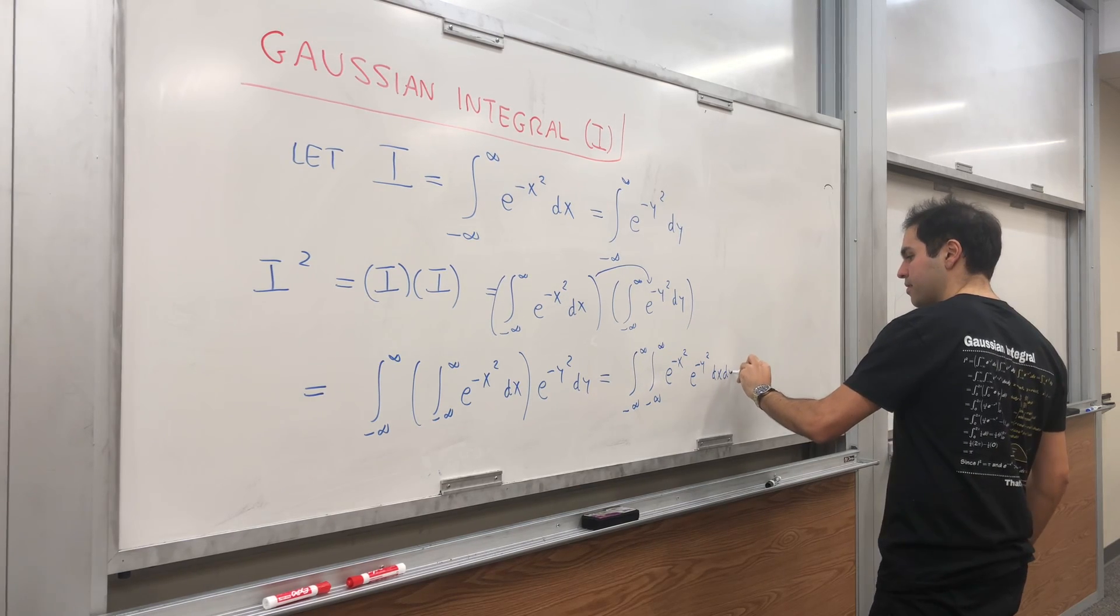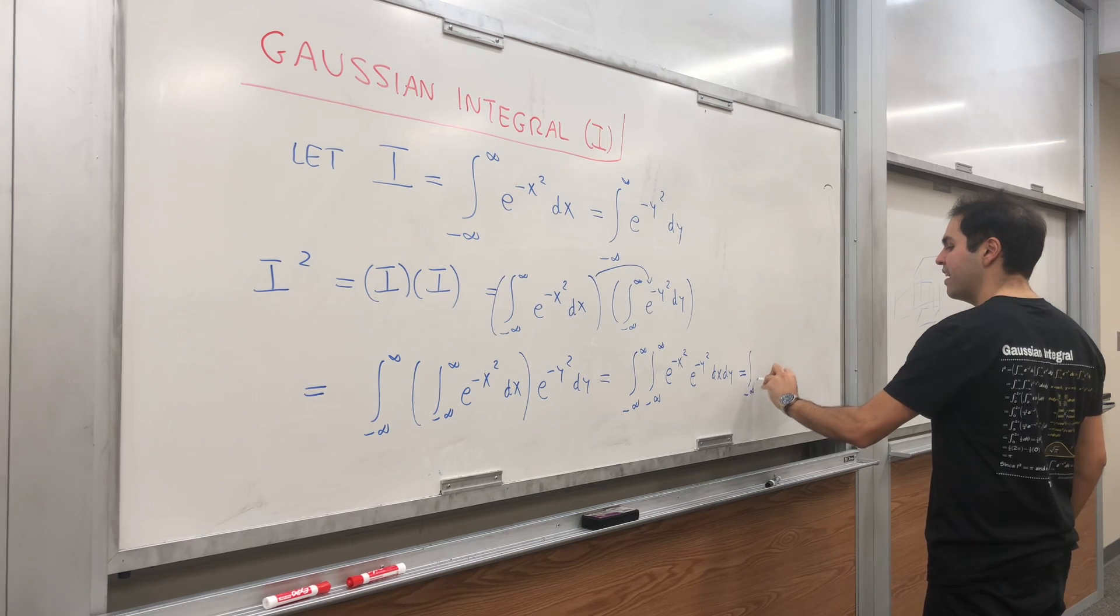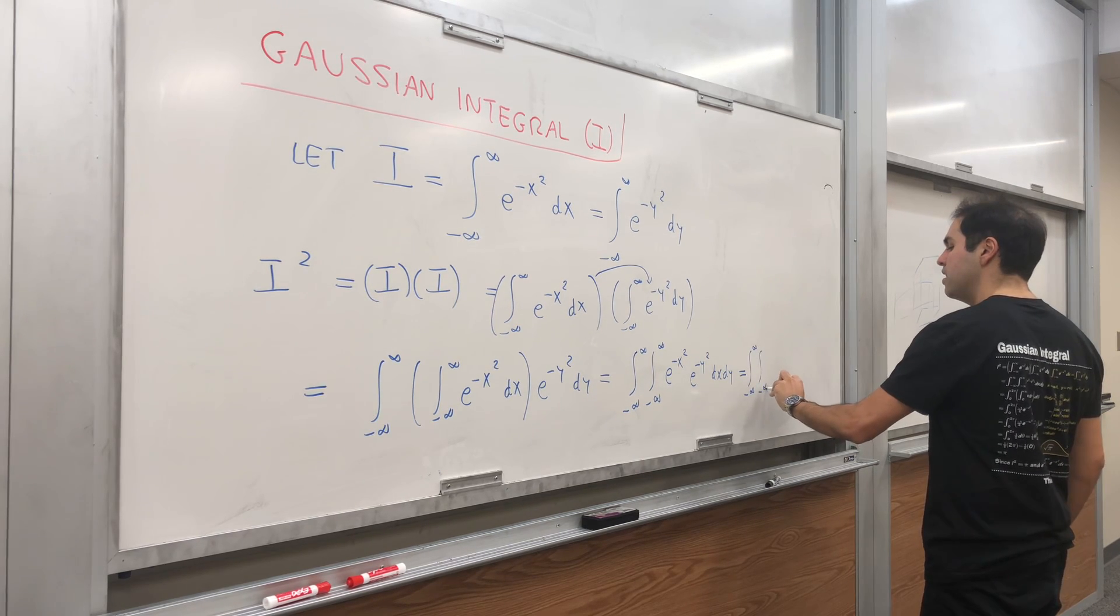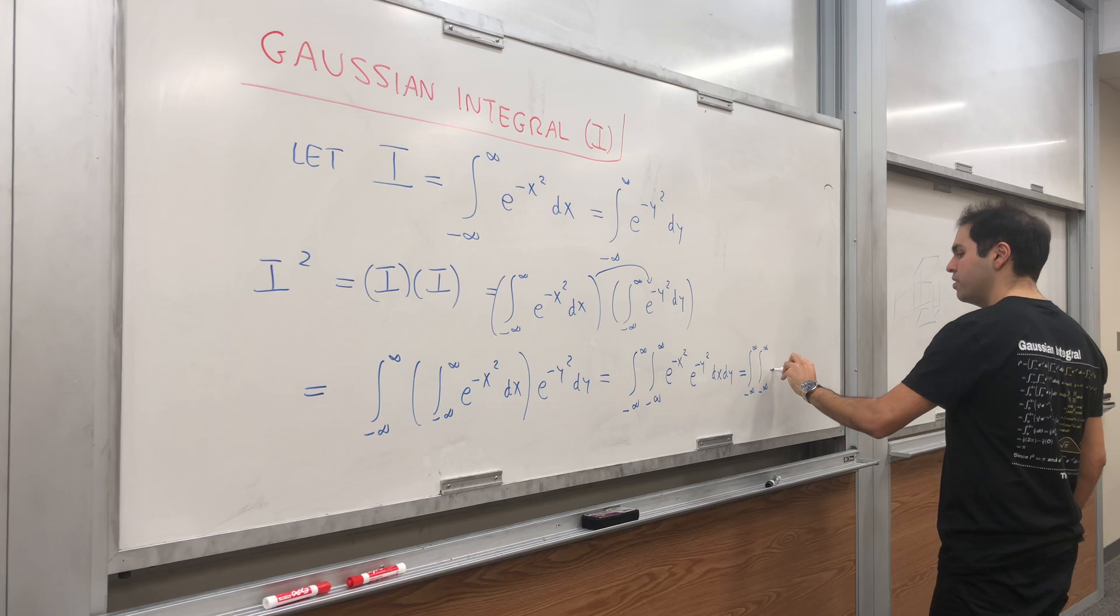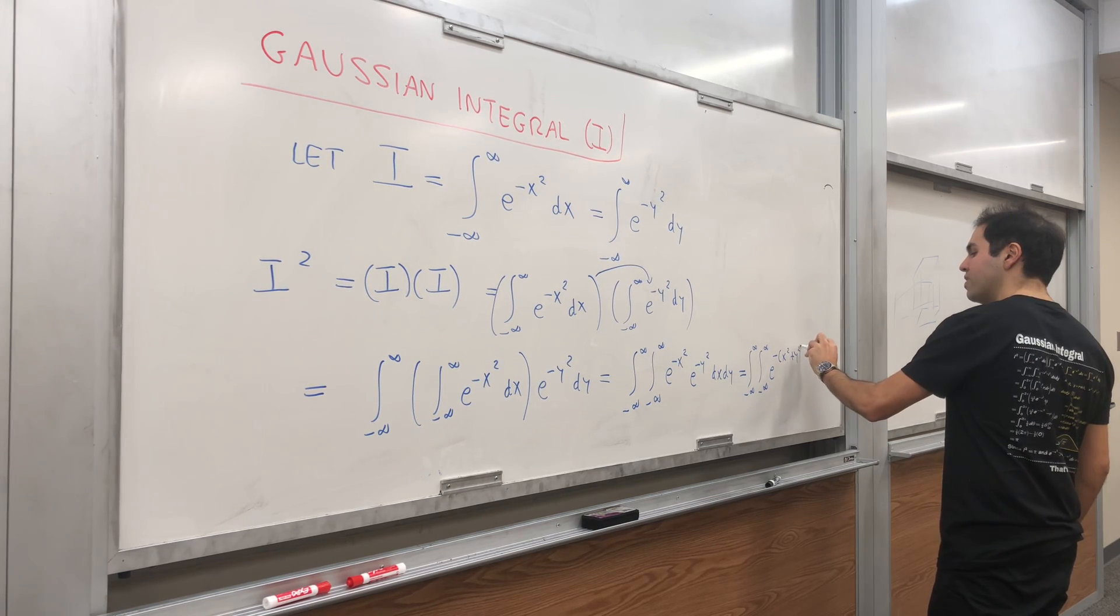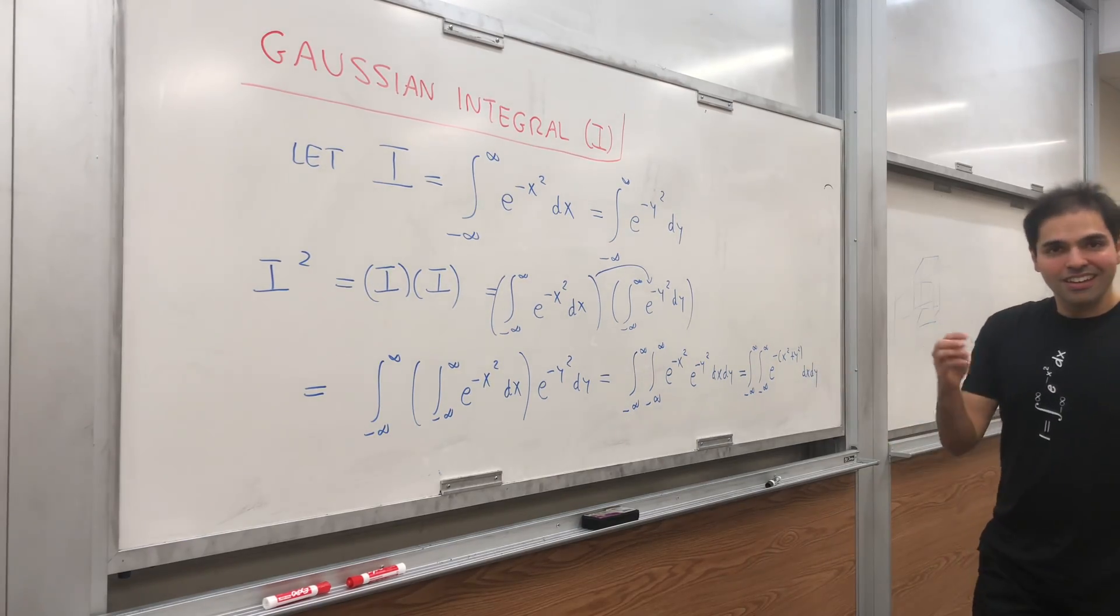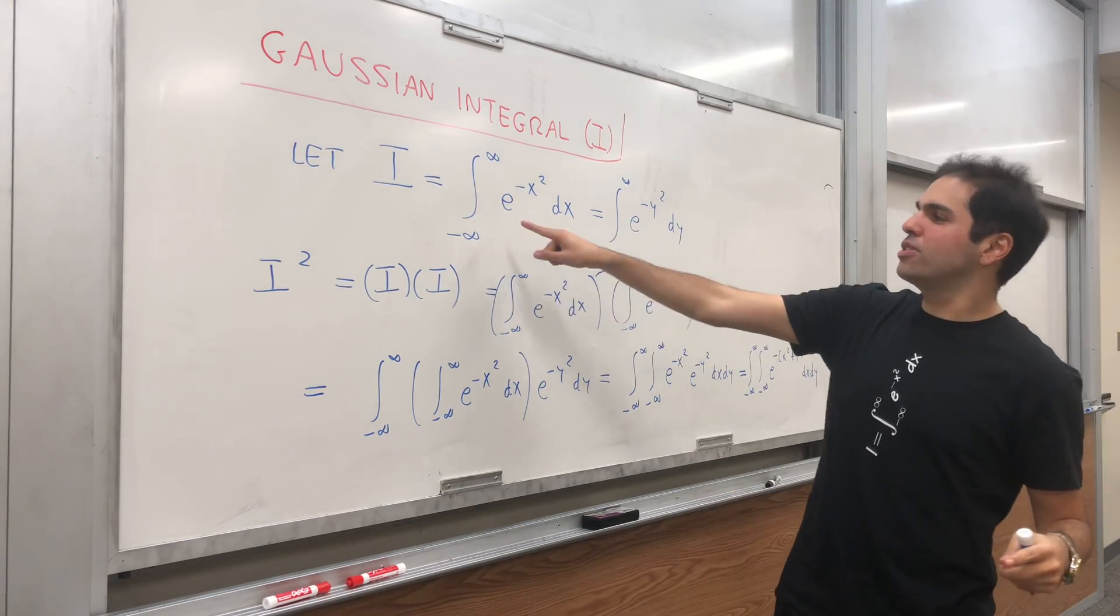Which, if you'd like, we can just rewrite as the integral from negative infinity to infinity, integral from negative infinity to infinity, e^(-(x² + y²)) dx dy.